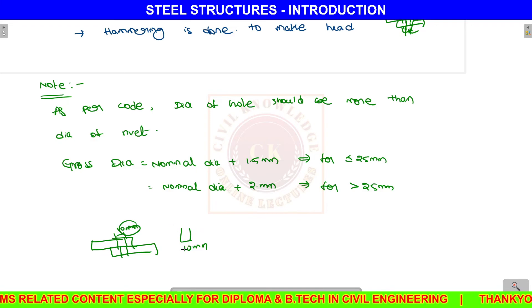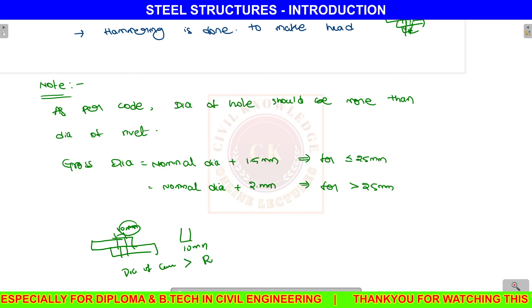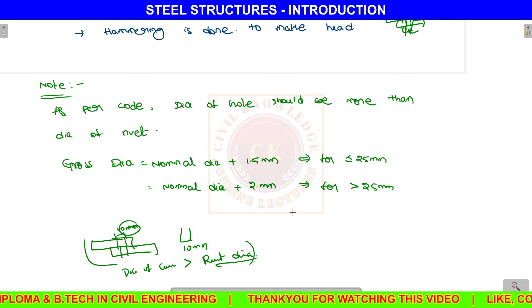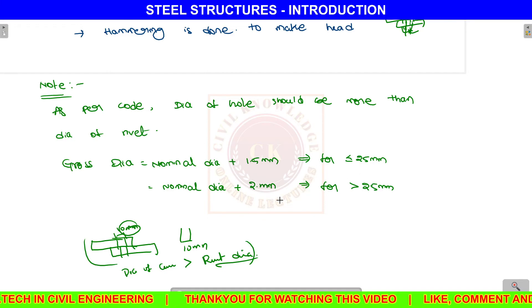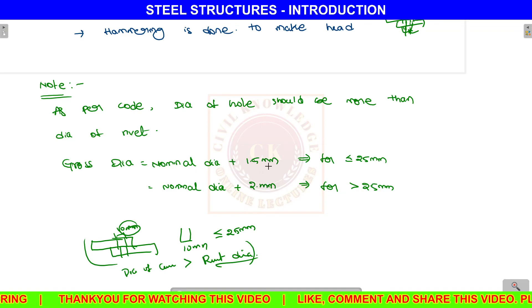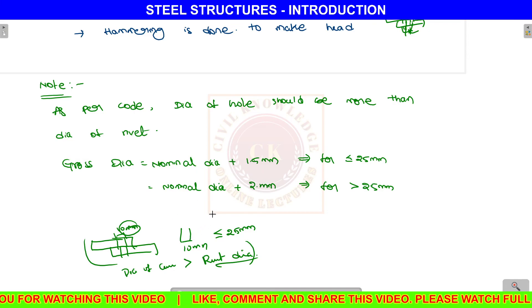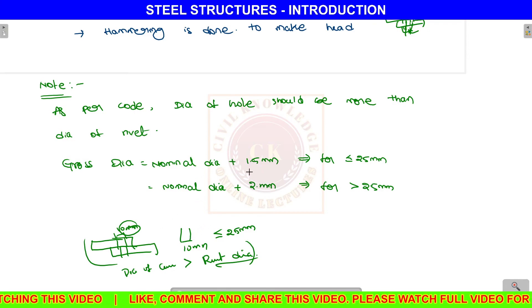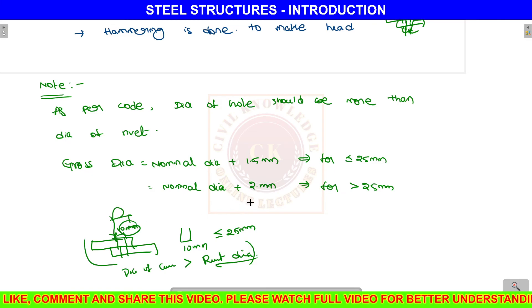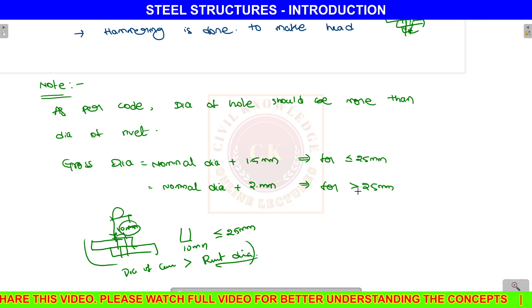The hole diameter must be more than the rivet diameter — this is the clearance system. For rivet diameter less than 25 mm, the clearance is 1.5 mm, meaning the nominal hole diameter is increased by 1.5 mm so the rivet is easy to insert. For rivet diameter more than 25 mm, a different clearance applies.